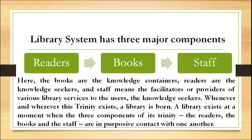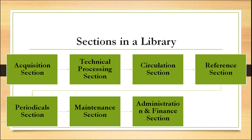A library system has three major components. The first component is the reader, the second is the book and the third is the staff. Books are the knowledge containers, readers are the knowledge seekers, and staff are the facilitators or providers of various library services to the users. Whenever and whatever this trinity exists, a library is born — a library exists when these three components are in purposive contact with one another.